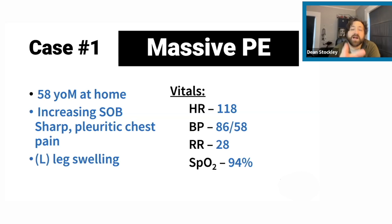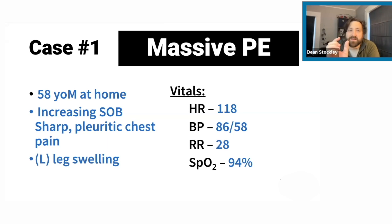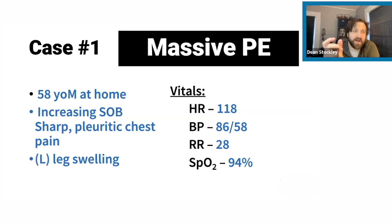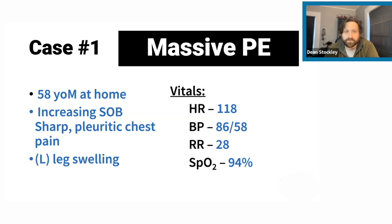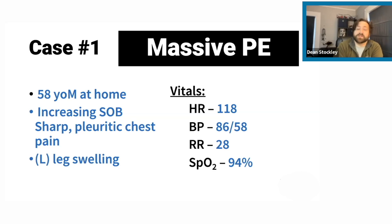A massive PE, also called high-risk PE — same thing — is where you have signs and symptoms of right heart failure with hemodynamic compromise. Massive PE and sub-massive PE — people get this confused — doesn't refer to the size of the clot. It's the consequence of the clot that determines the name. When we talk about obstructive shock, we're talking about massive PE: a PE causing hemodynamic change.